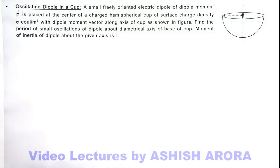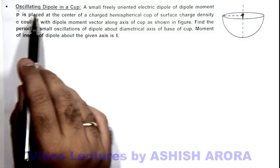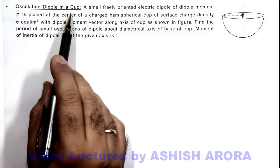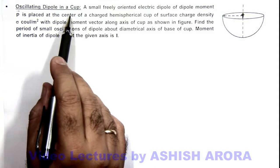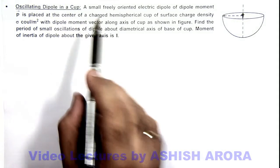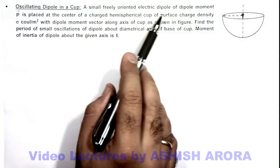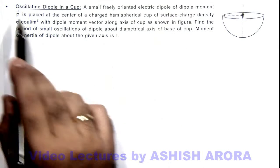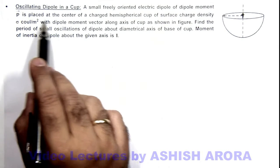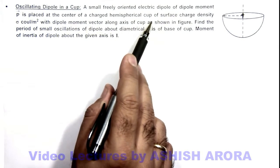In this illustration, we are going to discuss about an oscillating dipole in a cup. Here, we are given that a small freely oriented electric dipole of dipole moment p is placed at the center of a charged hemispherical cup.